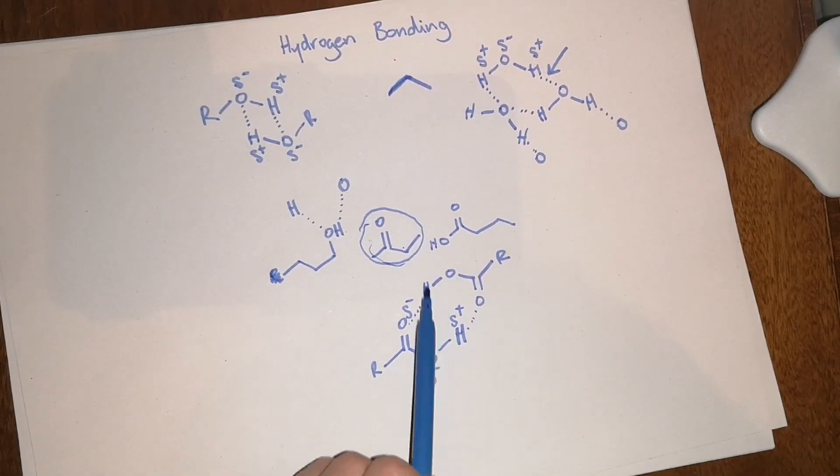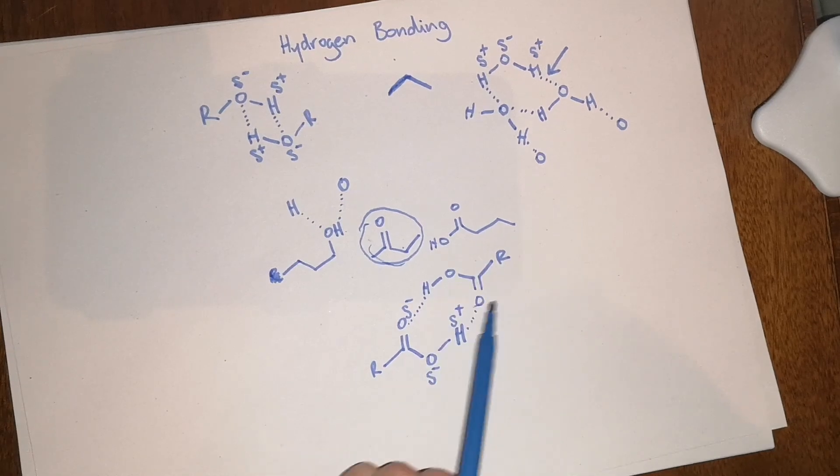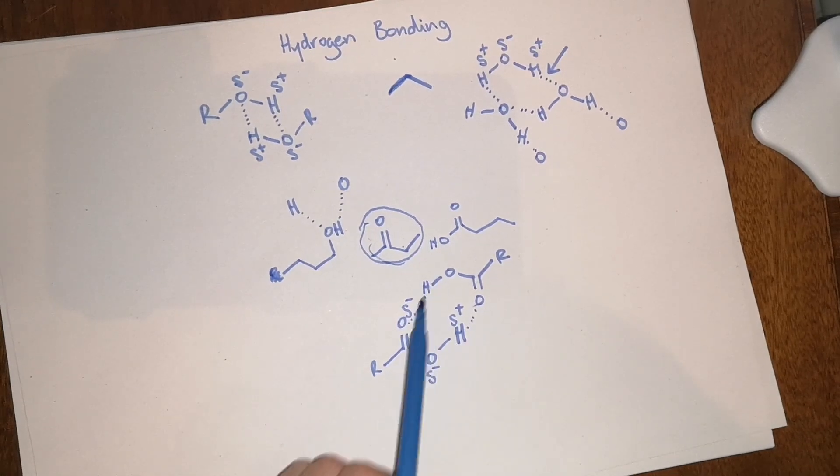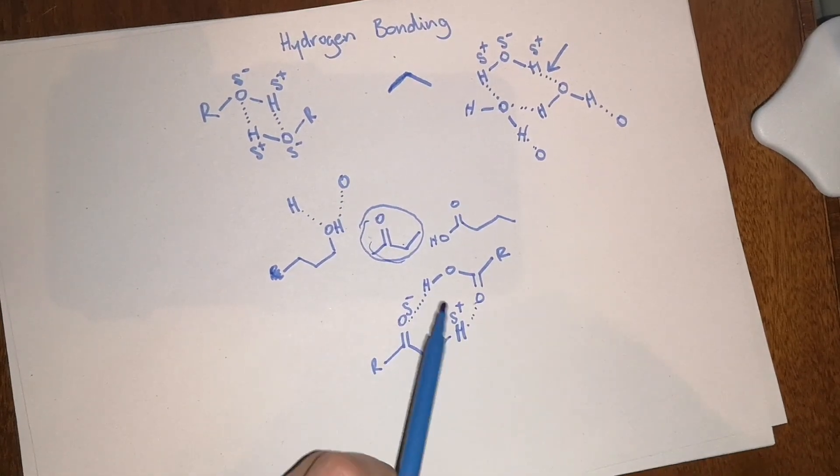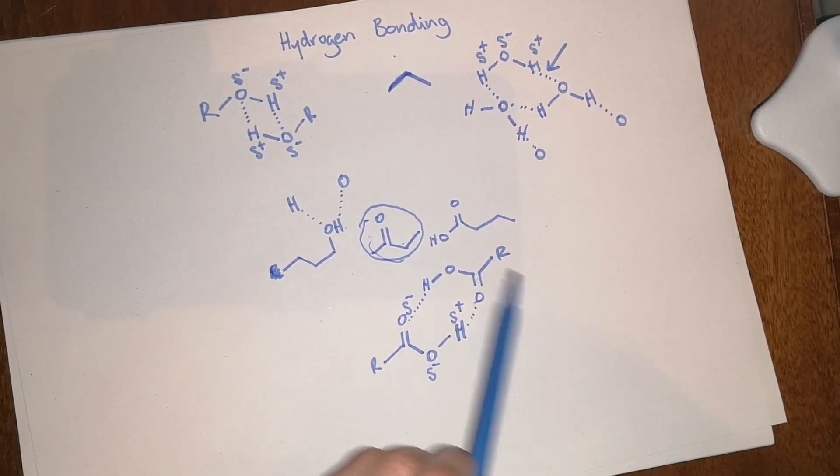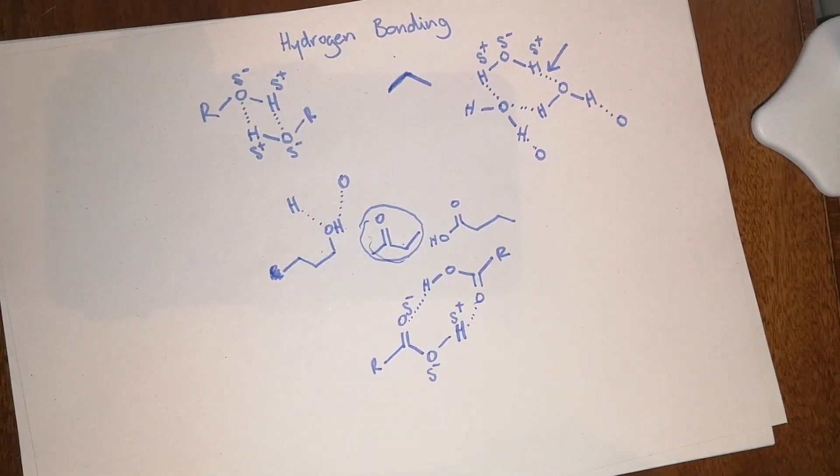That means every time you have a molecule of this carboxylic acid, you will form these dimer-like structures, and that gives them much higher boiling points than, for example, alcohols and especially ketones.